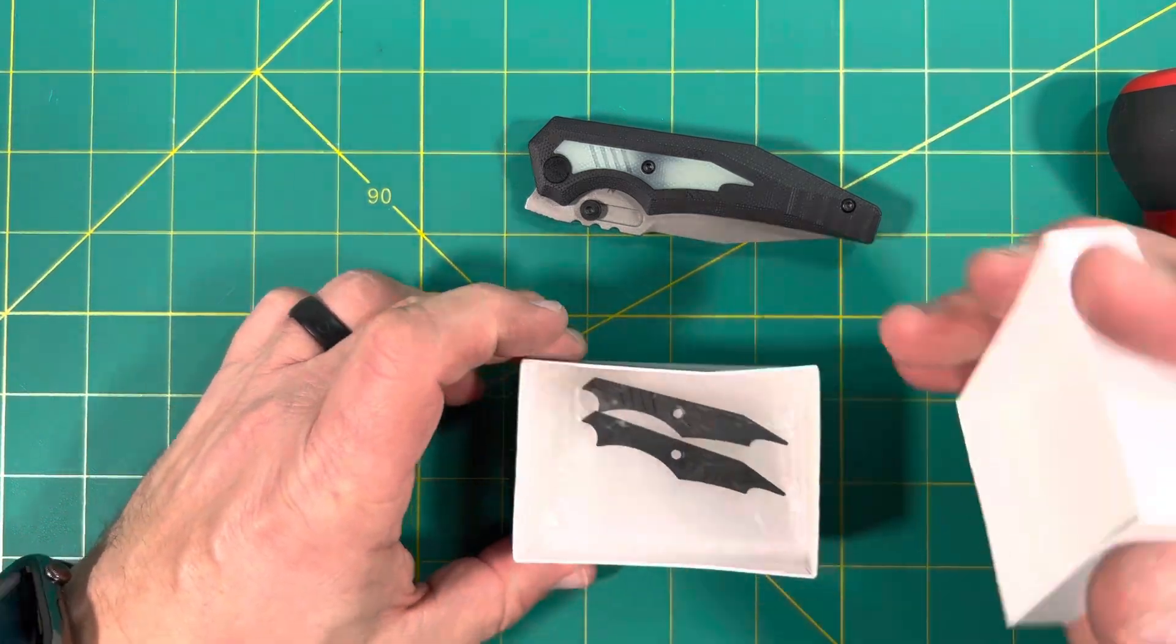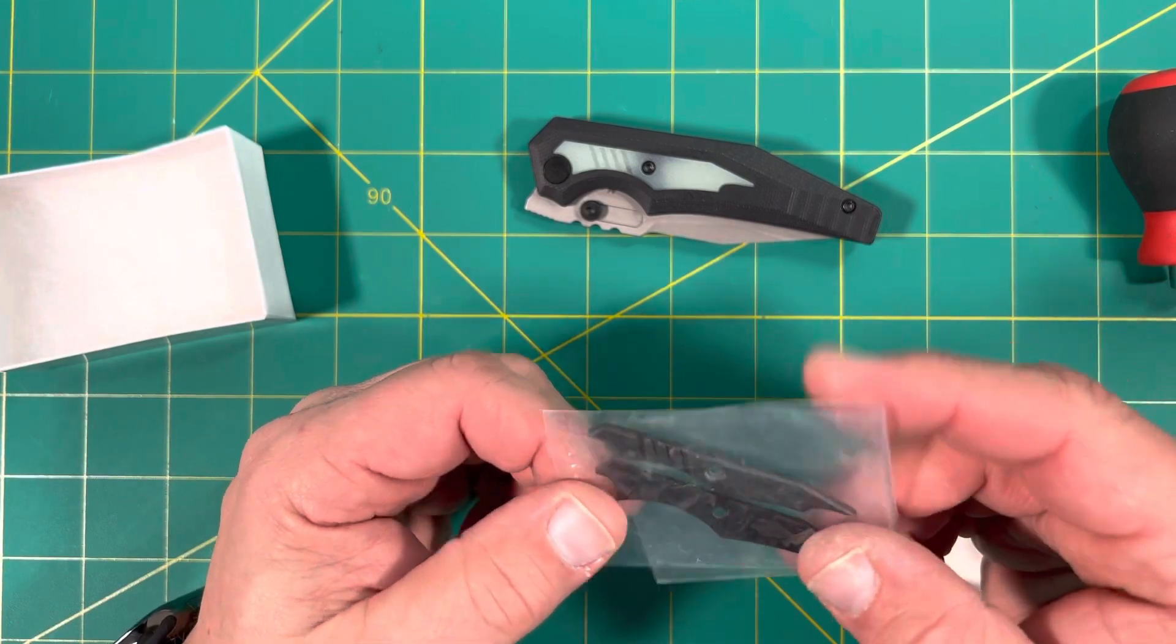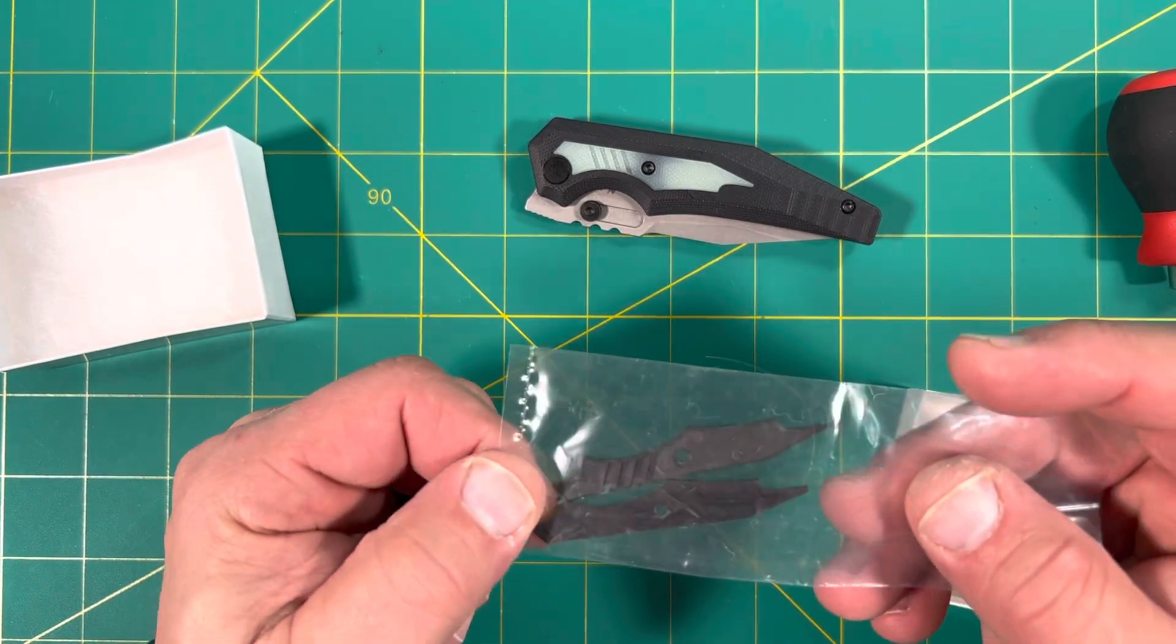All right, so let's see what this is. All right, it is the inserts. These are the carbon fiber glow-in-the-dark inserts. So let's put those on.